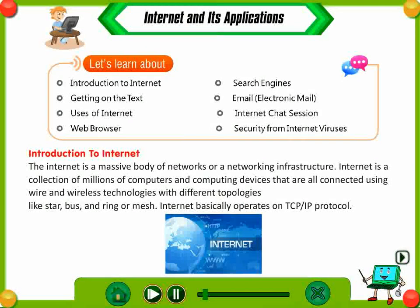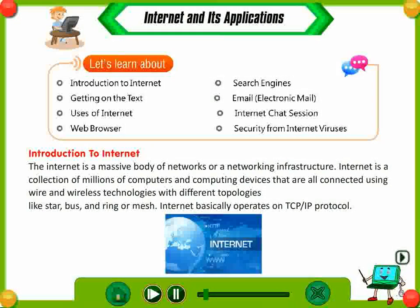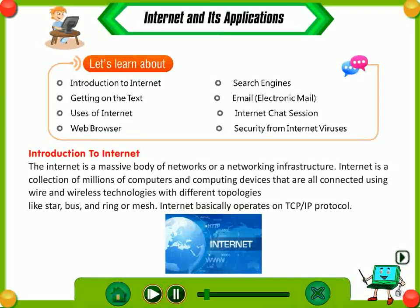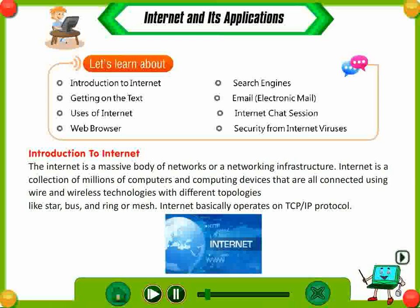Introduction to internet. The internet is a massive body of networks or a networking infrastructure. Internet is a collection of millions of computers and computing devices that are all connected using wire and wireless technologies with different topologies like star, bus, and ring or mesh. Internet basically operates on TCP/IP protocol.